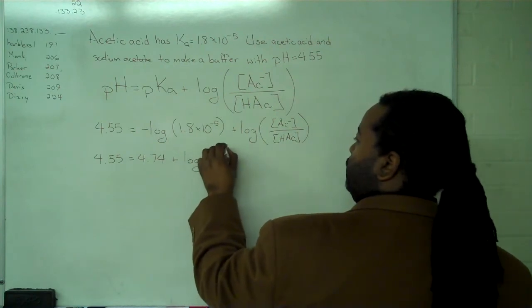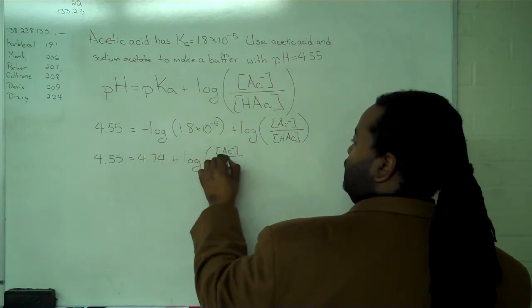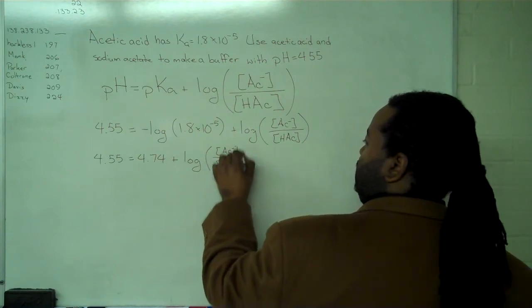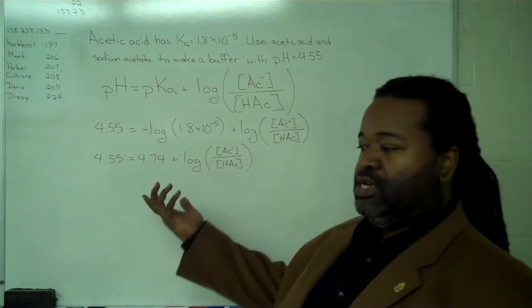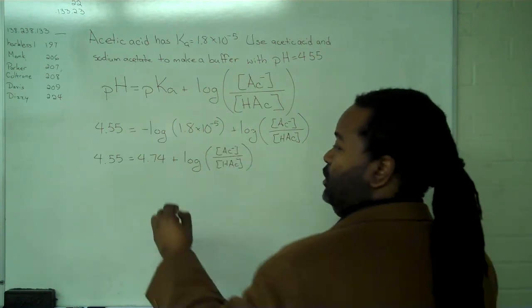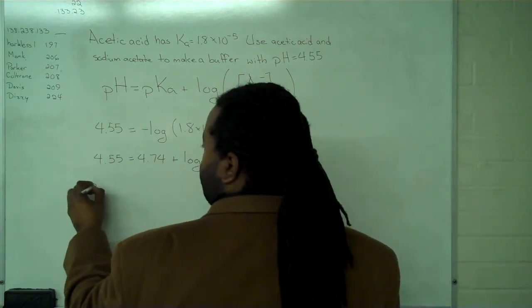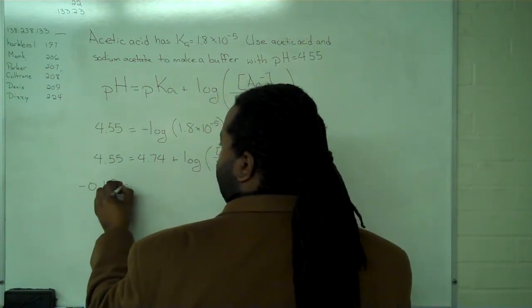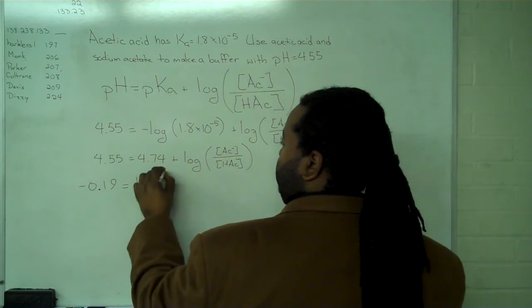The remaining step is to simplify so the log is on one side and the numbers on the other. This gives us negative 0.19 equals the log of the ratio.